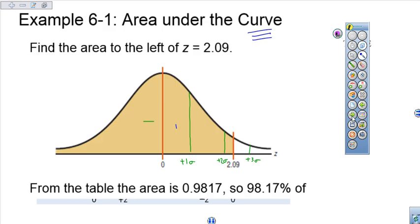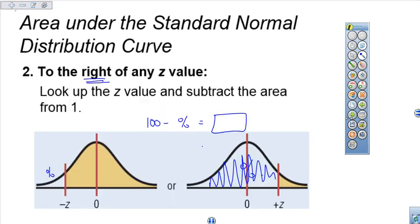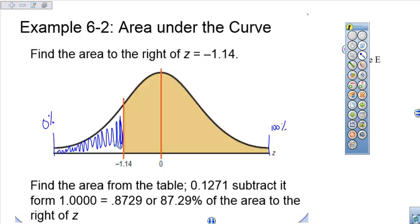So we come back over to our problem. So on our problem, we know that this part right here is 12.71%. So if we want to find what's left over to the right, we've got to subtract that from 100.